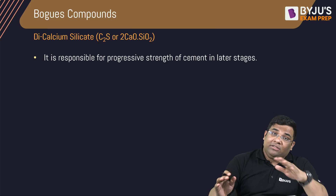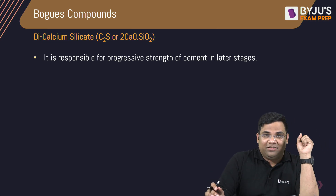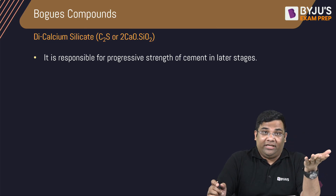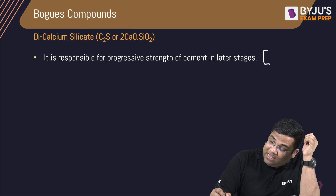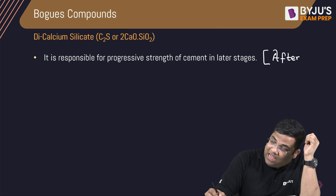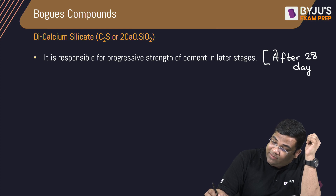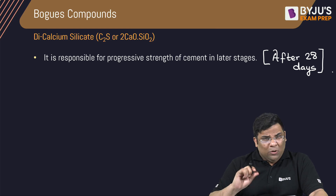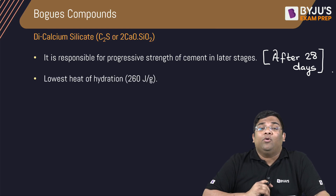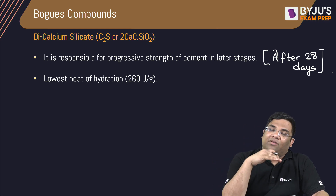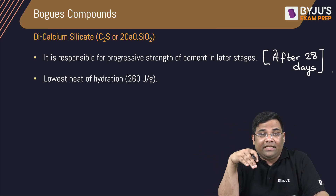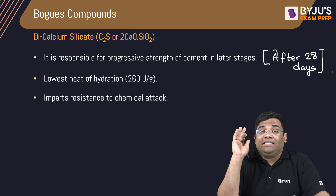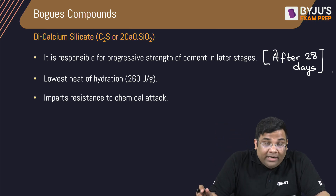C2S is responsible for the development of strength in the later stages — that is, after 28 days. C2S has a very low heat of hydration, around 260 joules per gram, which is almost half that of C3S. C2S also provides resistance to chemical attack.